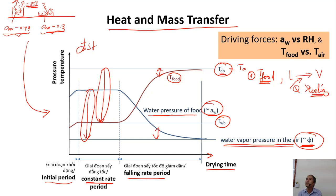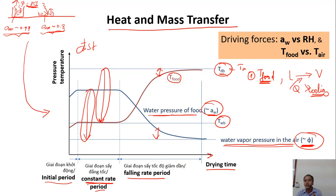When you drop alcohol on your skin you feel cool, because alcohol evaporates very fast, taking energy from your skin and the surrounding air, making your skin cool down. Similarly, during the constant rate period the temperature of food does not increase to the dry bulb temperature of the air, because of the water evaporation — explained by the wet bulb temperature concept.